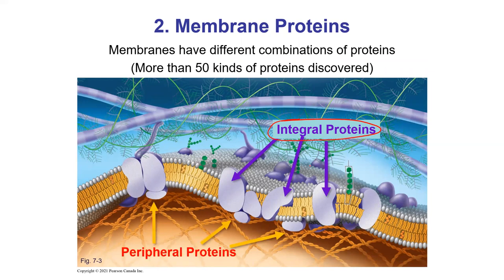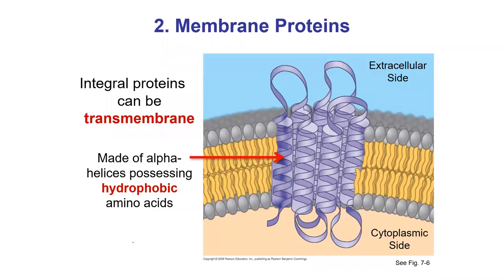The other types are loosely associated with the membrane and called peripheral proteins — they can be attached to phospholipids or to other proteins. There are many, many types of membrane proteins — the number is probably hundreds — and they come in a variety of shapes, sizes, and functions.